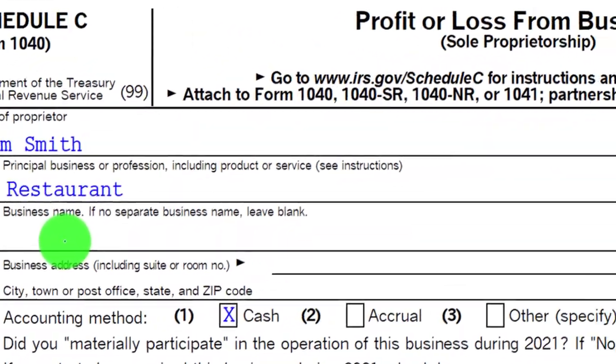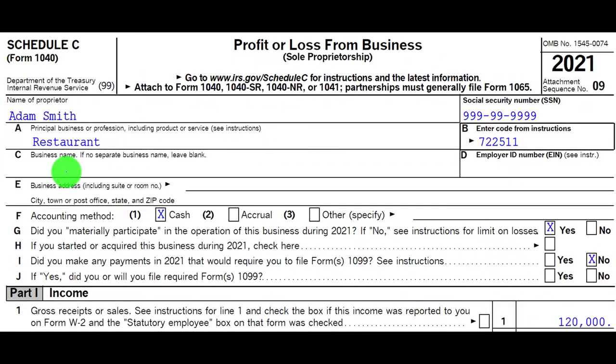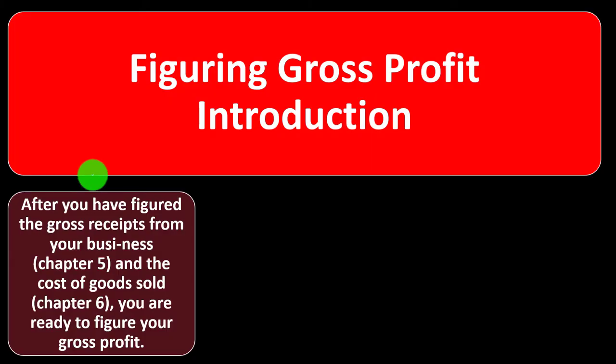This is the Schedule C — Profit or Loss from Business — basically an income statement. So now we're looking at Figuring the Gross Profit. Note that Gross Profit isn't the bottom line; we're not talking about net income. We're talking about Gross Profit — basically income less the cost of goods sold.